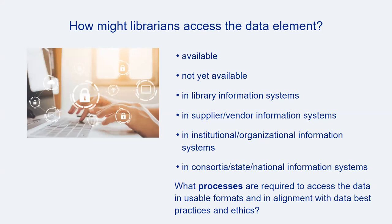Given the complexity of organizations, it's possible that information necessary for responding to a library assessment need might exist but not be accessible. Therefore, it's necessary to think through the availability of any information you may need. Is it currently available, and if not now, will it become available during a reasonable timeframe? Where is it held — in systems directly accessible by the library, in vendor or supplier information systems, in systems owned by the institution, in consortia-based state or national systems, or in data maintained by professional associations? There is likely a process in place to request access, one that may be straightforward or anything but.